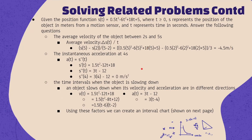Part B asks for the instantaneous acceleration at t=4. Instantaneous acceleration is the second derivative of the position function. Taking the first derivative of s(t) gives 1.5t² minus 12t plus 18, and the second derivative gives 3t minus 12. Plugging in t=4: 3(4) − 12 = 0. So at t=4 the object has zero acceleration — it is no longer accelerating.